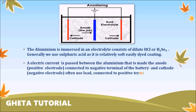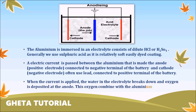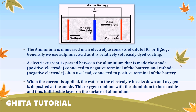Whenever electricity is passed through this electrolyte, water is decomposed into hydrogen and oxygen. Hydrogen is a positive ion and oxygen is a negative ion. Oxygen is attracted towards the positive electrode — the anode — which is made up of aluminum. The aluminum and oxygen react with each other to form aluminum oxide. In this way, there is a formation of oxide layers on the aluminum articles.